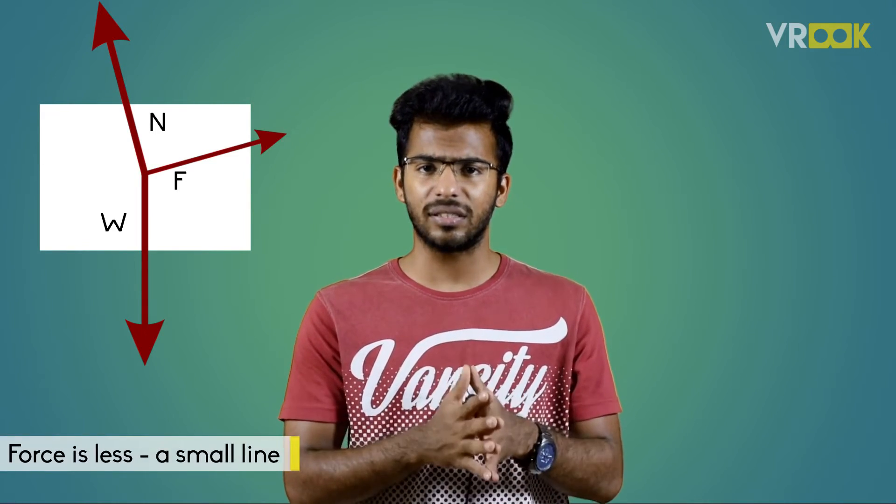Another aspect to keep in mind while drawing the FBD is the magnitude of the forces. If the force is less it should be represented as a small line just like what we did for the frictional force here.